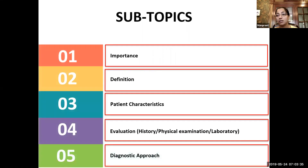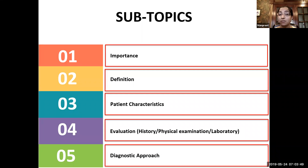I divided this into five important subtopics: the importance of why it is so essential to diagnose anemia; the definition, which is very essential to know; how to approach a patient with anemia and the patient characteristics that affect someone having anemia; how to evaluate a patient with anemia; and the diagnostic approach — how do you group them?